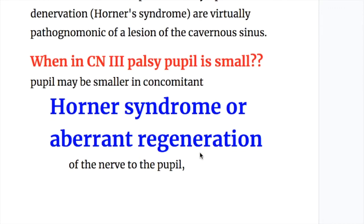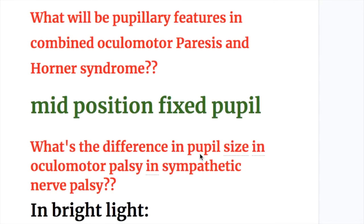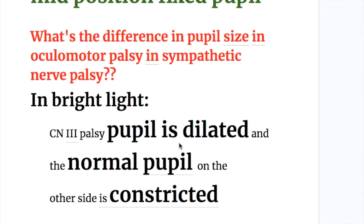Aberrant regeneration of the nerve to the pupil also constricts the pupil. In combined oculomotor paresis and Horner syndrome, the pupil will be in a mid-position fixed state.